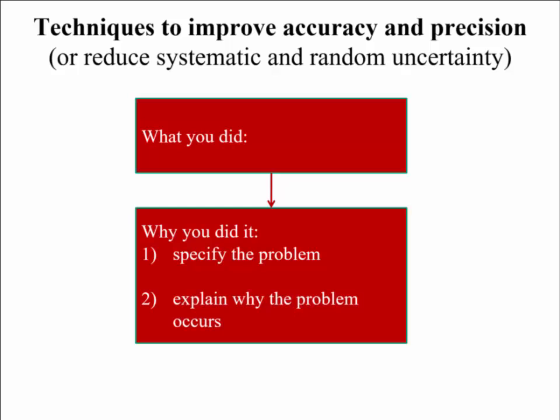A really good thing to think about when you're designing your experiment and when you're writing a report to describe what you did is to think about and analyze what you did, how did you take the measurement, so what you did, and why you did it. So particularly, what was the problem you were trying to minimize and explain why that problem occurs. So I've got five examples in the next few slides to try and give you some ideas for how to write these things down and how to structure your thinking.